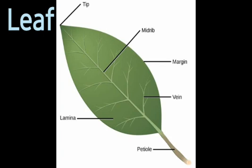The lines on the leaf are called veins. Do you see a thick vein in the middle of the leaf? This vein is called the midrib.